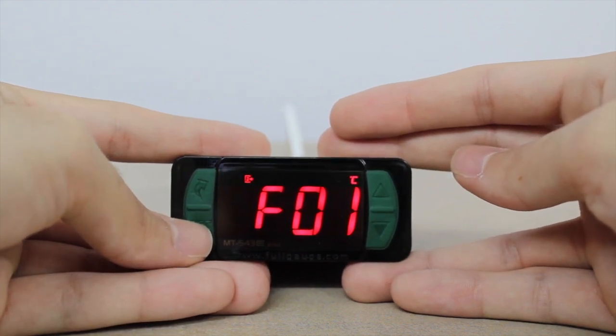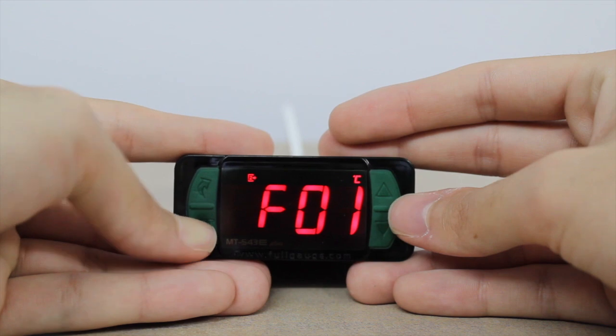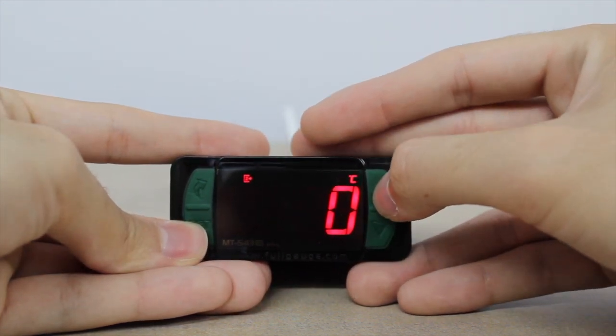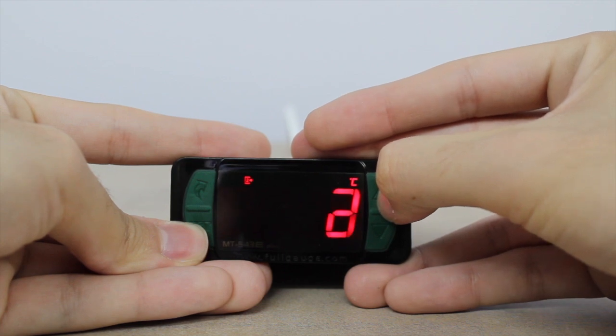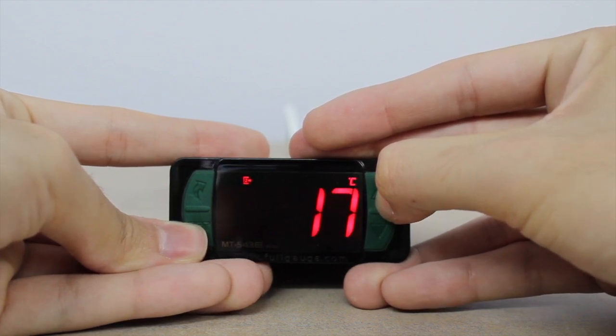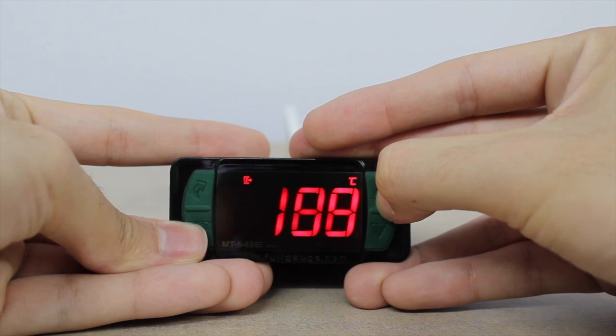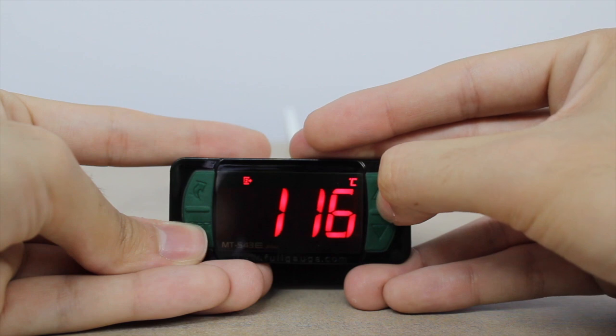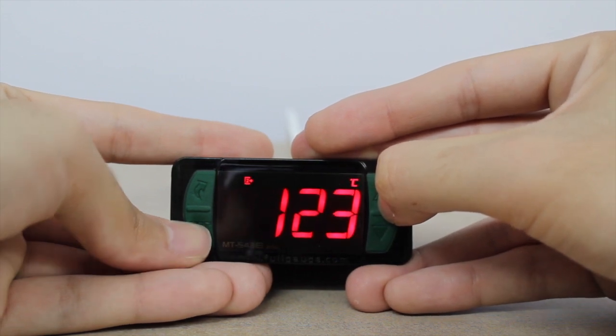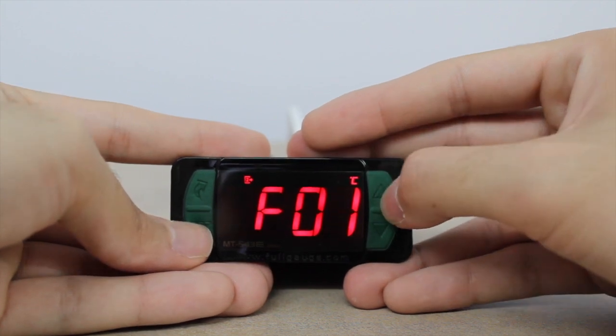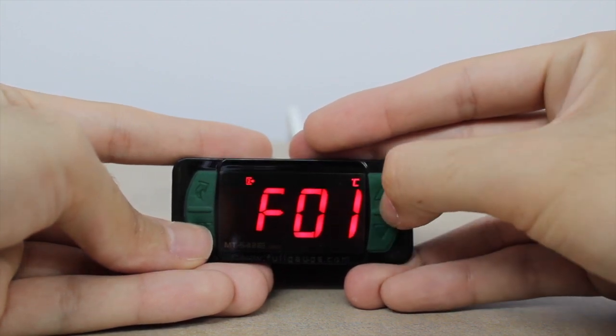On Function F01, we're going to insert the code 123 using the up and down arrows. The code 123 frees up access to the controller settings.